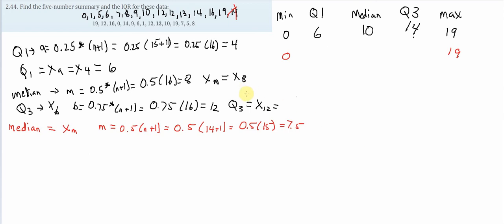So, the median is equal to 7.5. So, there is no 7.5th position, right? These are all whole numbers. So, what that means is the median occurs halfway between position 7 and position 8. So, 1, 2, 3, 4, 5, 6, 7, between 9 and 10.